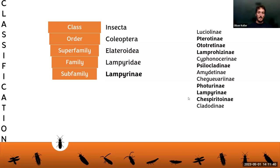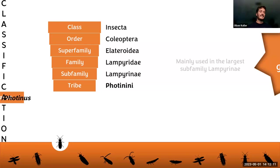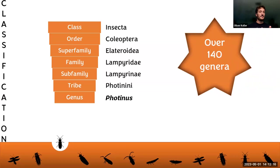After subfamily, you can have tribes. Photinini is a tribe name — they usually end in I-N-I. These are mainly used in the largest firefly subfamily, Lampyrinae, because we have so many species. The next level is the genus, which is the first part of a species name: in Photinus borealis, the first word, Photinus, is the genus name. It's italicized because it's Latin or Greek. Currently we have over 140 genera in the world.